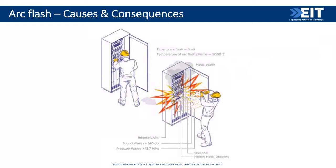Looking at this image — the time to an arc flash, we're talking milliseconds. In this particular example, five milliseconds is the typical time when an arc flash occurs from the fault to the flash — very, very quick. In this picture, you've got a worker working on a switchboard. The switchboard is obviously live, the panel is open, and we have an arc fault. We've got that intense light, sound waves greater than 140 decibels, pressure waves, metal vapour because metal is being vaporised, shrapnel, and molten metal droplets all blasting out of that switchboard to someone standing in front of it.